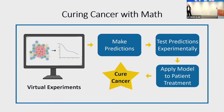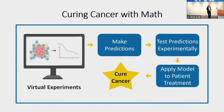Then, I can work with an experimentalist to test my model predictions in mice. If my model predictions don't match experimental results, then we can fine tune the model using this new data. On the other hand, when my model predictions match experimental results, then we can use my model to inform human patient treatment.